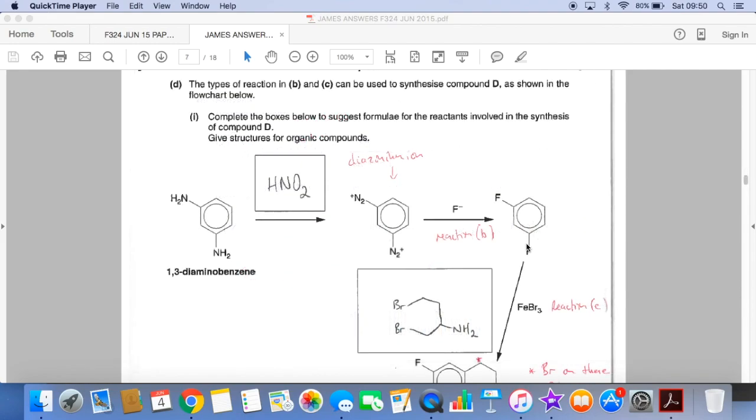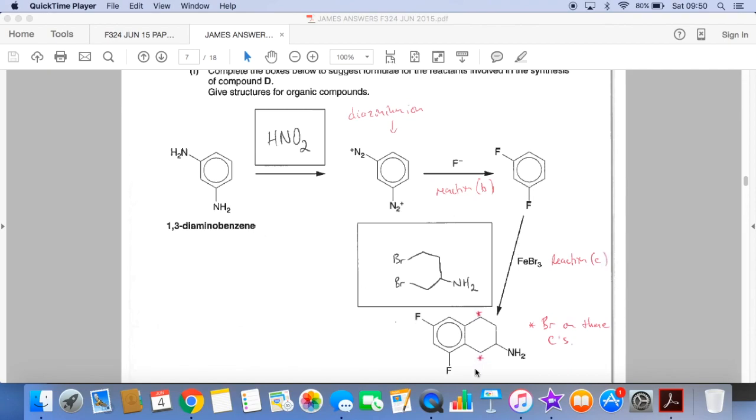The substances in the boxes now. So how do you go from this to this? Well, that's a diazonium ion. So this is straight out of the notes. You react it with nitrous, HNO2, nitrous acid. This is reaction B going from this to this and then to go from this to this, that's actually reaction C.